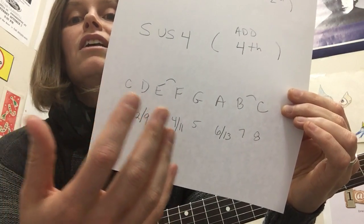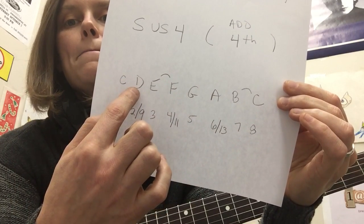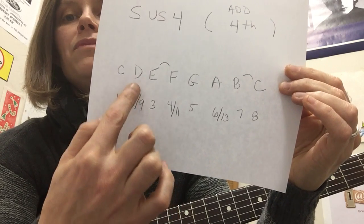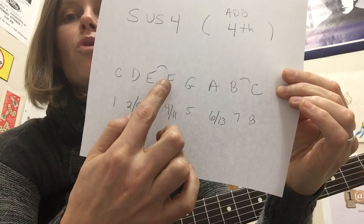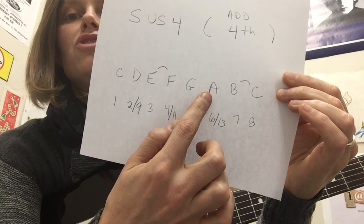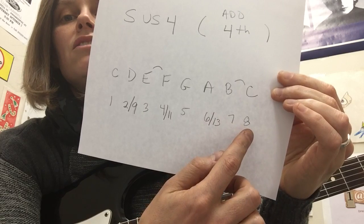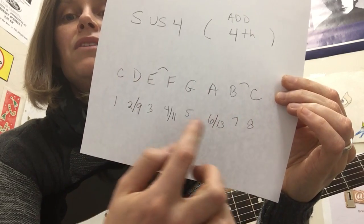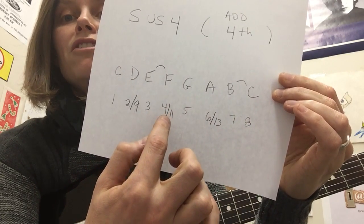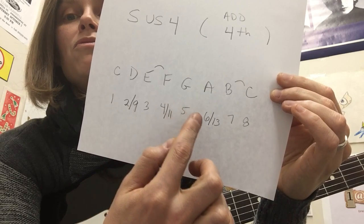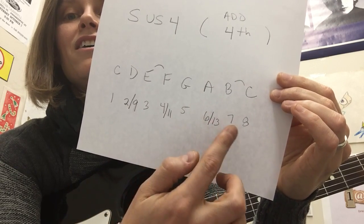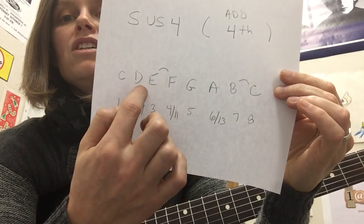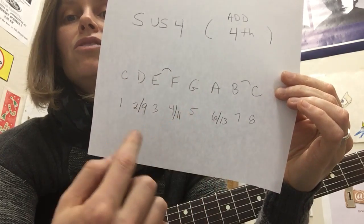Those are tones that are normally in any chord that you play — the basic ones. Then you have your 2, which is D; your 4, which is F; your 6, which is A. If I kept going, 8 is the octave C, 9 would be D an octave higher, 10 would be E, 11 would be F, 13 would be A. When you're looking at these notes in between the chord tones — D, F, and A — those are extensions.